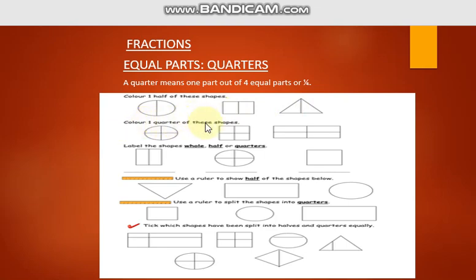Next: color one quarter of these shapes. Quarter means when you divide anything into four parts and color or take only one part out of those four — that is the quarter of that shape. In this shape you can see it is divided into four equal parts: one, two, three, four. When you color any one part, it is the quarter. Similarly for the other shapes, color any one part out of the four equal parts to show the quarter.